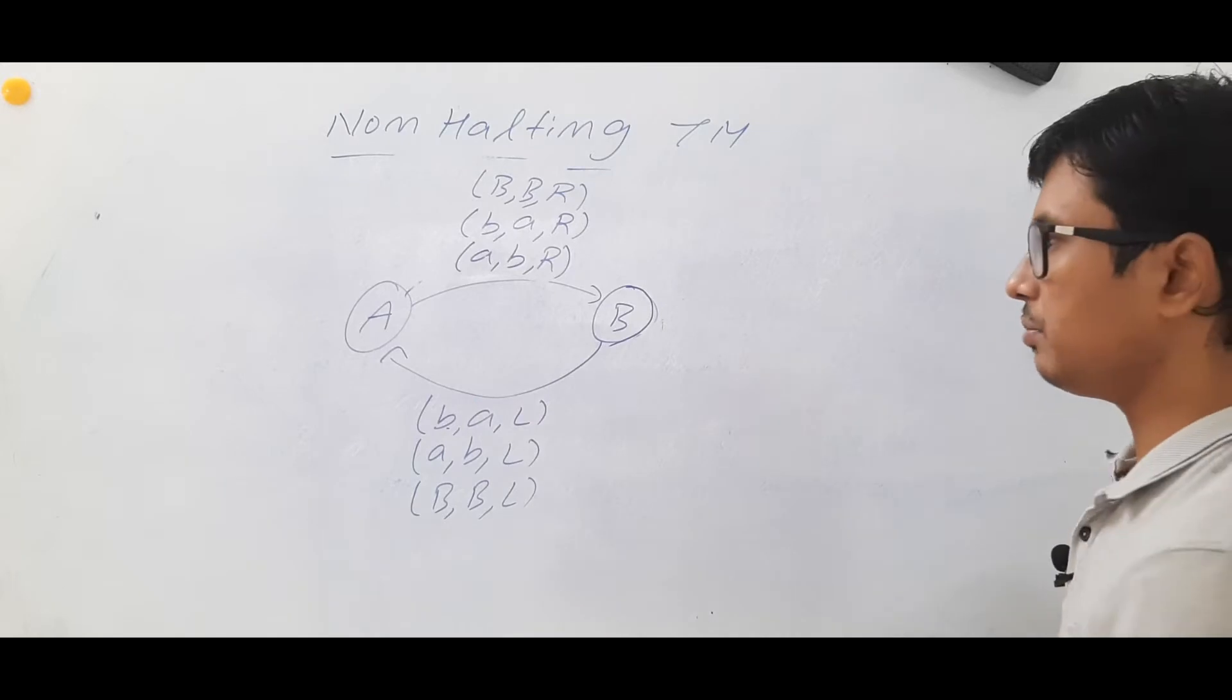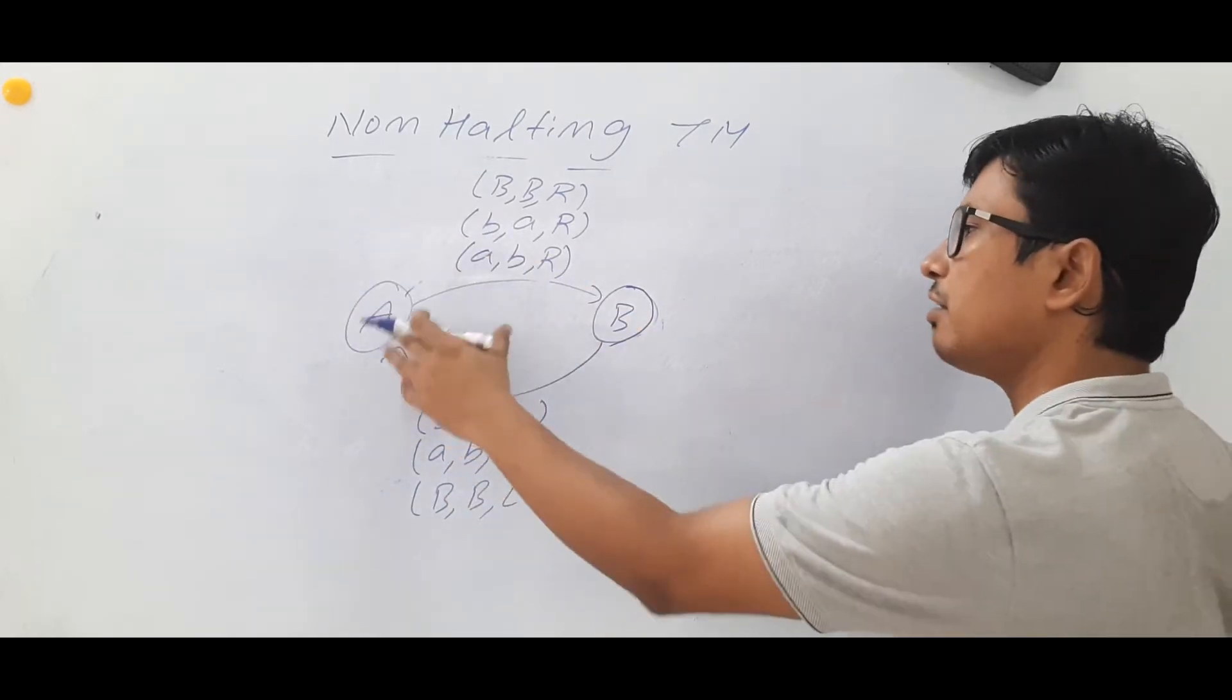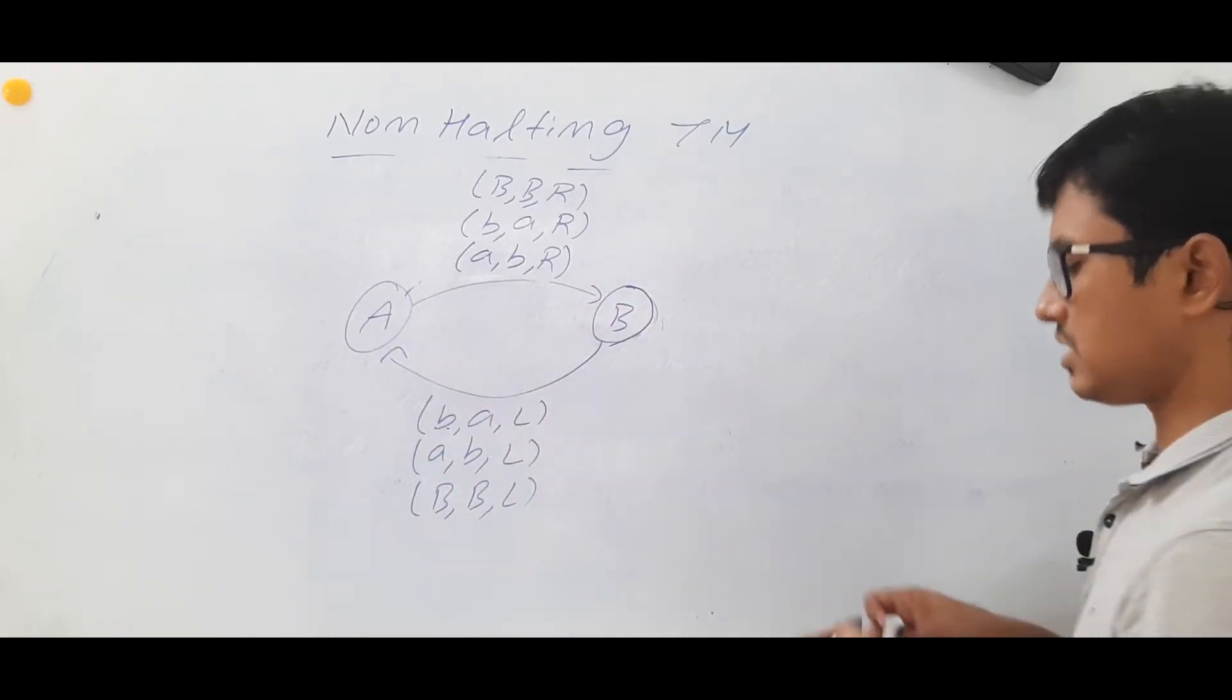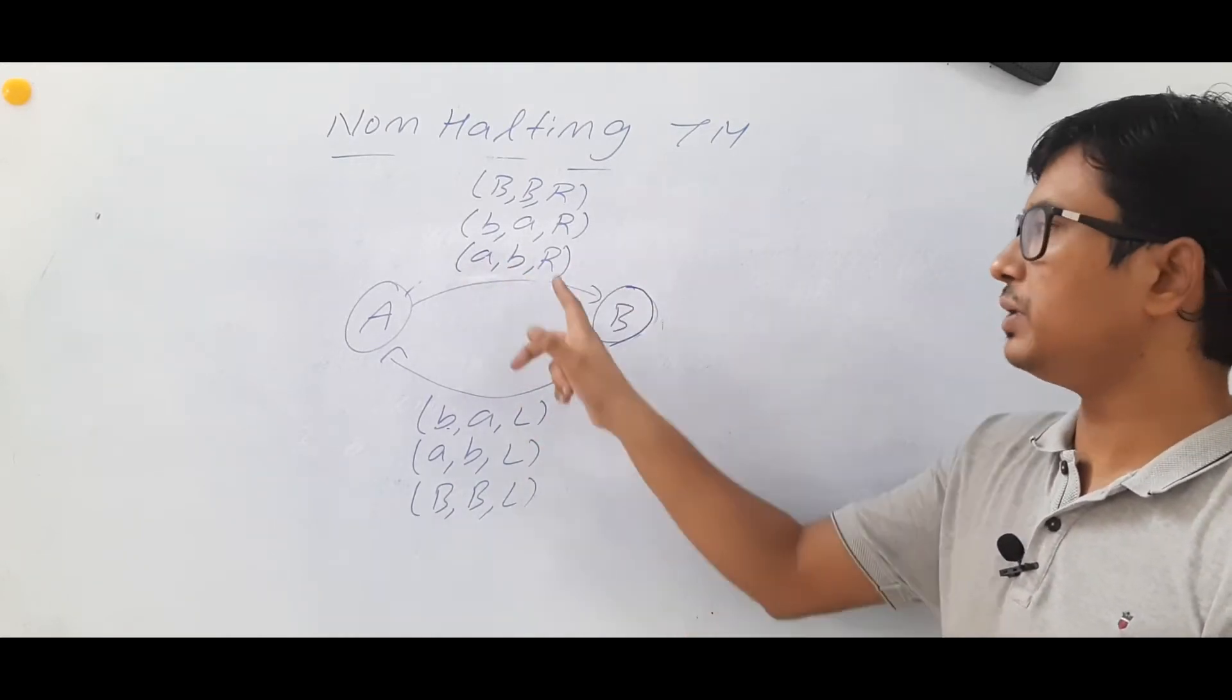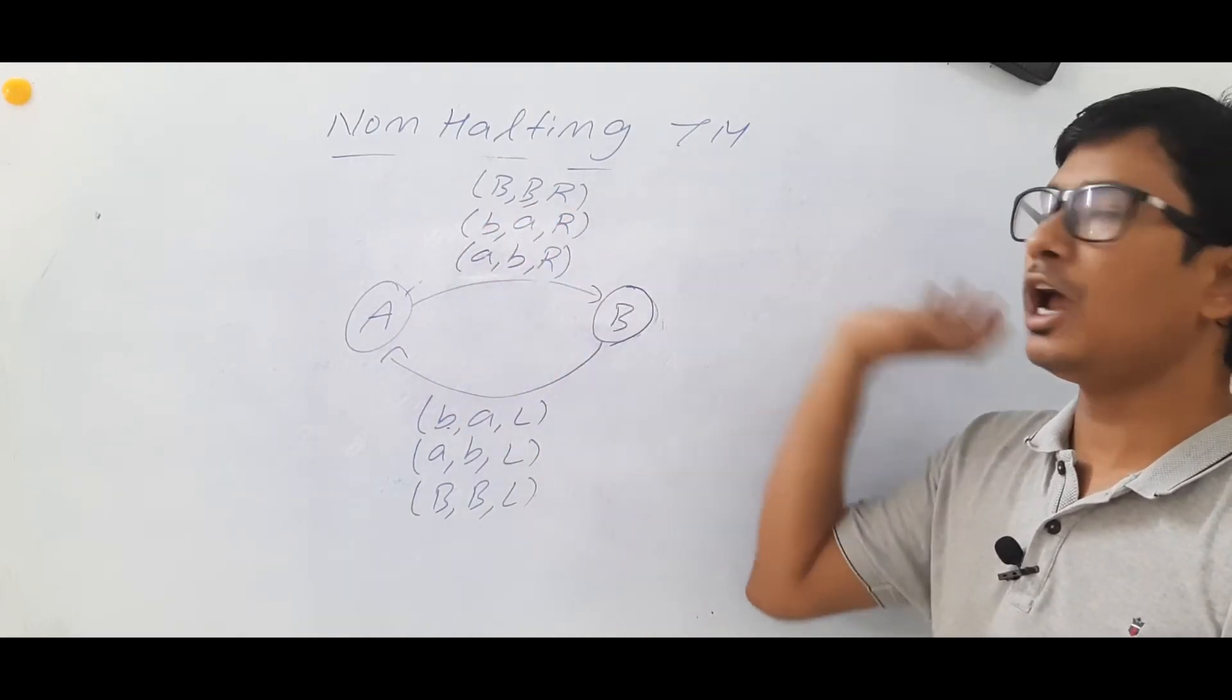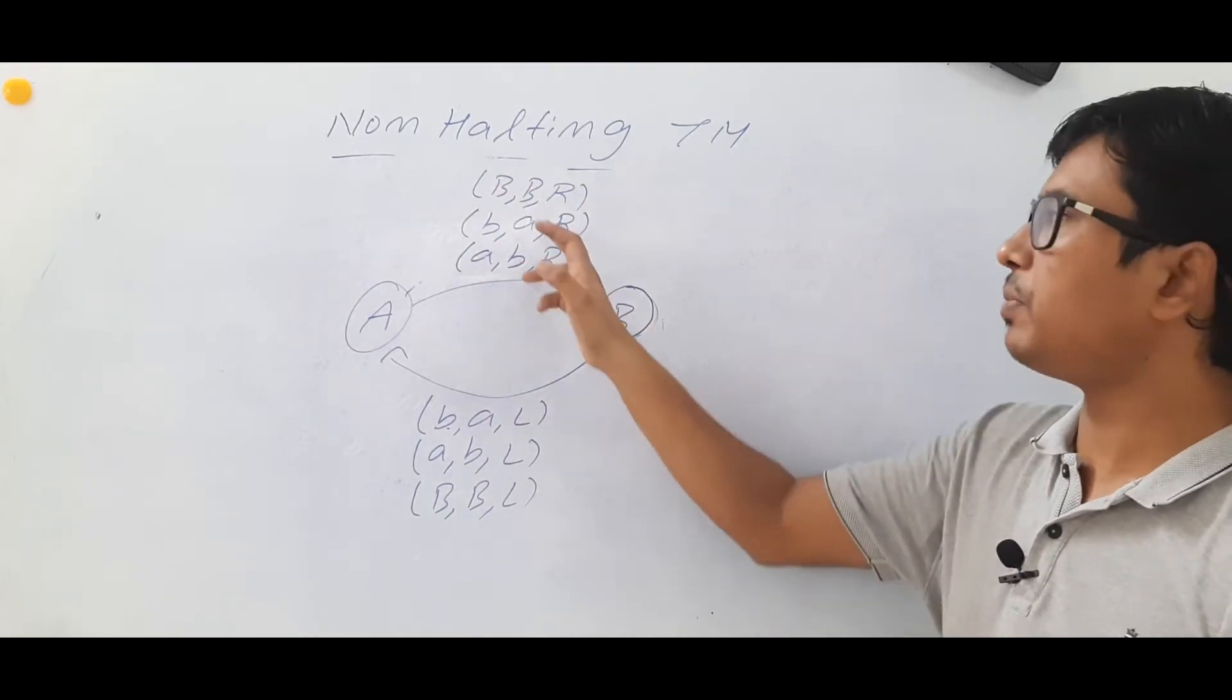I have taken a Turing machine which consists of two states—state A and state B. What state A is saying: if you find the alphabet A, you modify it to B and move to the right. If you find the alphabet B, you modify it to A and move to the right. If you find a blank, make it as a blank and move to the right.